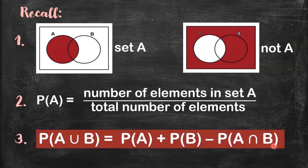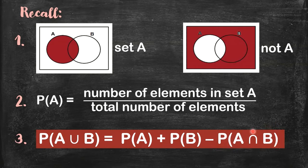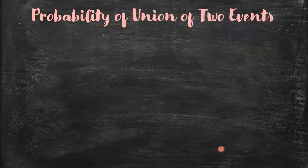What do you do when there is no intersection — or if the two events are mutually exclusive? The probability of A intersection B just becomes zero. So let's answer the given problem.